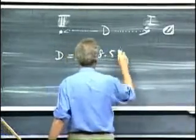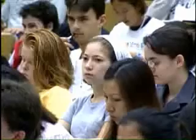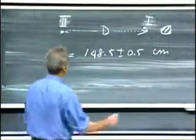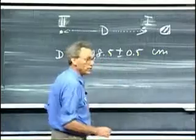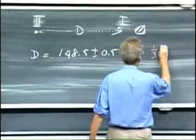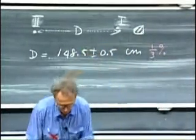148 and a half plus or minus 0.5 centimeters. I want you to appreciate that this is a very small percentage error. This is only five parts out of 1,500. That is one out of 300, so that is only a one-third percent error. That's very small. That's what we call the relative error.